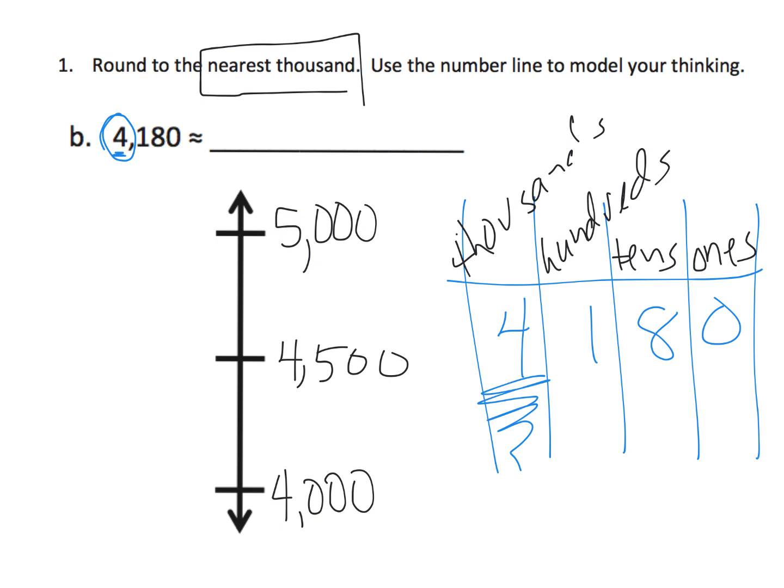Now that we've got our number line set up correctly, we need to figure out where does 4,180 live on this number line. Does it live down here on the number line, or does it live up here on the number line? And it shouldn't take too much work for students to see that it should live down here. Let's put it right there, that's a reasonable estimation.